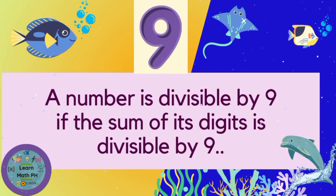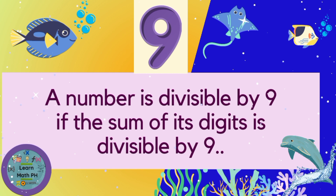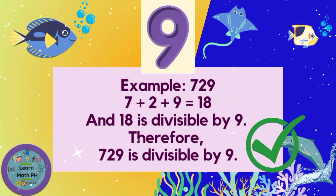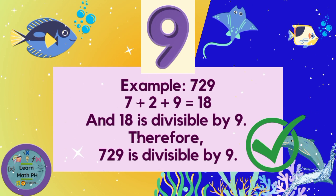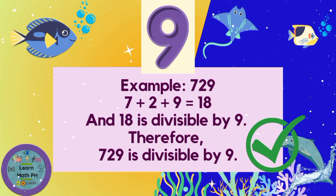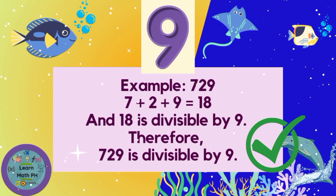A number is divisible by 9 if and only if the sum of its digits is divisible by 9. Parang hawig siya doon sa rule ni number 3 — i-add mo yung digits, tapos pag divisible siya doon sa number na yun, yung original number ay ganun din. Sa ating example, 729: 7 plus 2 plus 9 equals 18, and 18 is divisible by 9. Therefore, 729 is divisible by 9. I-add lang yung digits, and kung yung sum ay divisible by 9, therefore the original number is divisible by 9.